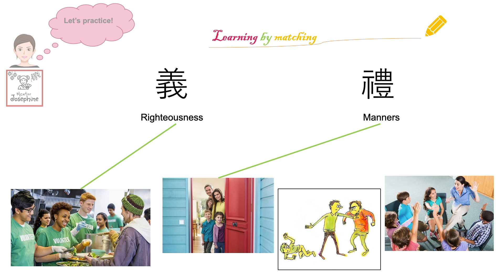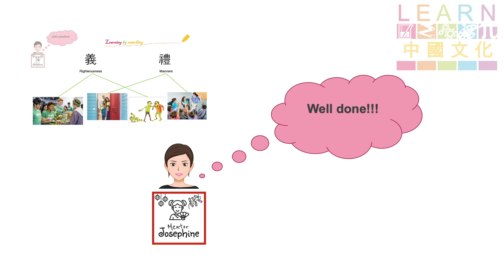The third picture shows a man standing up for his friend and confronting the bully, so this belongs to righteousness — because he is reaching out to help, and obviously this is the right thing to do. The last picture belongs to manners. We can see that the children are very responsive to their teacher, which is a very good manner in school. When someone talks to you, you should always listen and respond so as to make people feel respected. Good job! I can call you a little master in morality now. Well done!